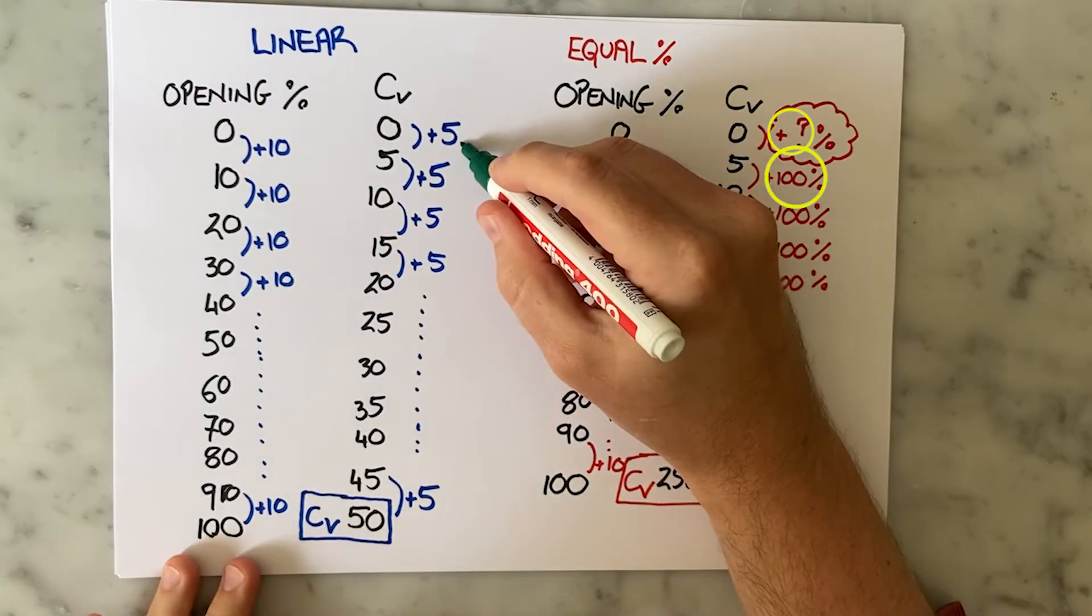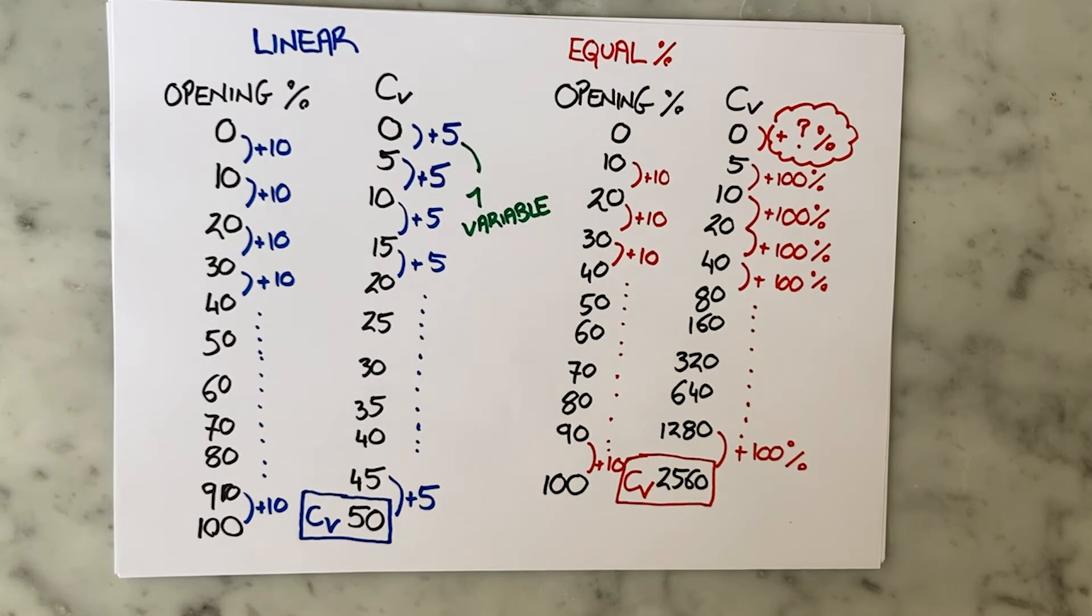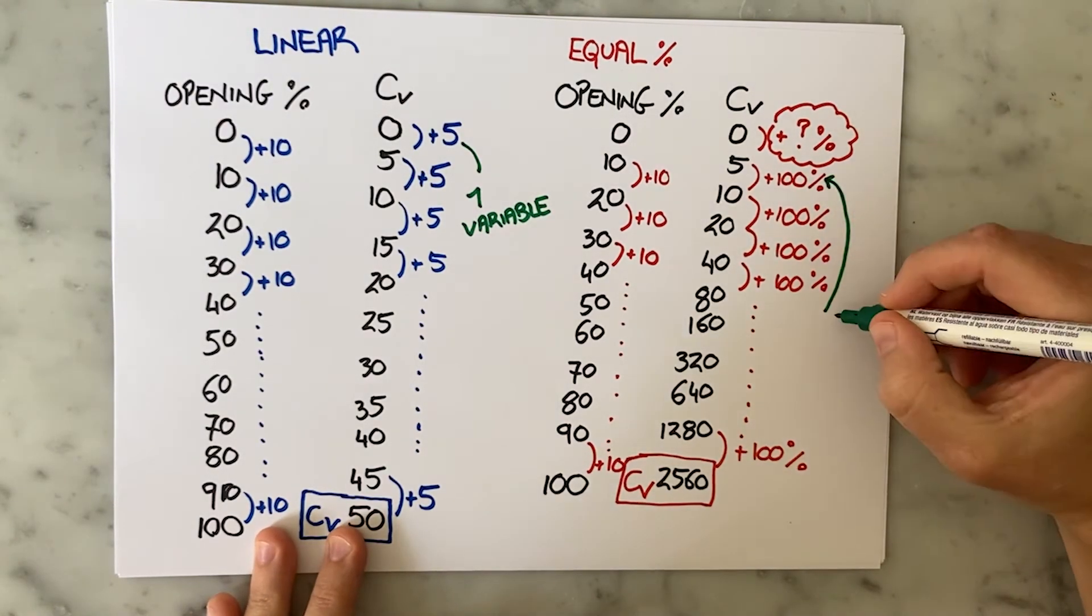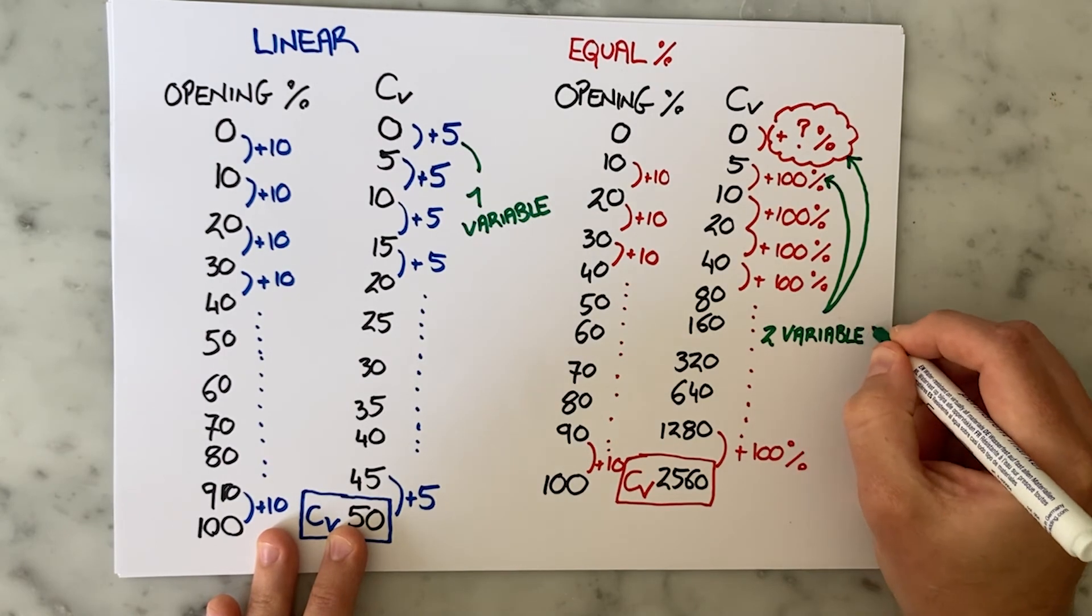So where a linear valve there's only one variable I need to figure out—that's the gradient of the line—an equal percentage valve has two parameters I need to figure out if I want to get an equation.